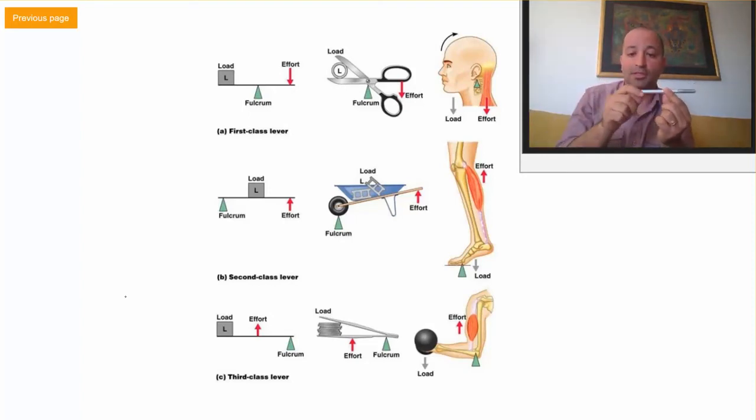If you move the fulcrum to the end of the lever and put the load in the center, then push the end up or down - that is Class 2. The force or effort is at one end, the load is in the middle.